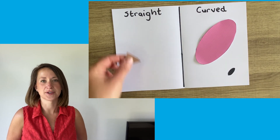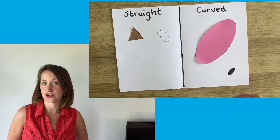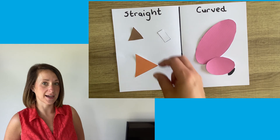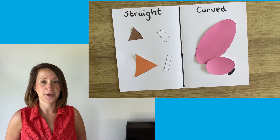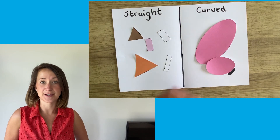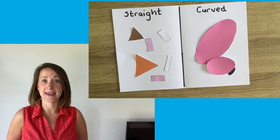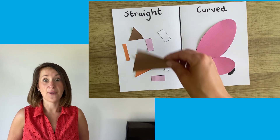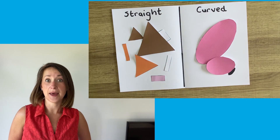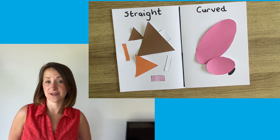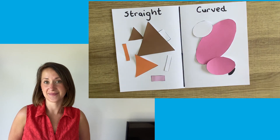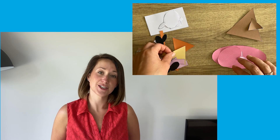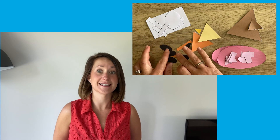You could also do some sorting with the shapes. Perhaps sort them into ones with straight sides and ones with curved sides, or sort them into ones with three corners or less, or ones with more than three corners. You could also sort the shapes according to colour.